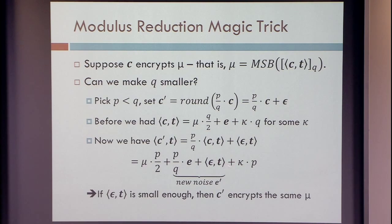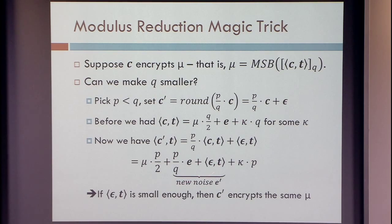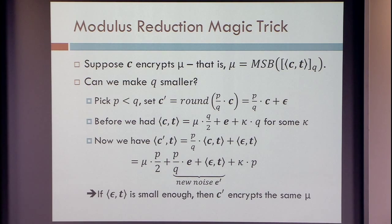In addition, the term k times q became k times p — this is the mod-p reduction. The only added thing we have now is a new error term, which is the inner product between our rounding error and the secret key. The rounding error is a small vector — at most a half or at most one. So what do we do with the secret key? Is the secret key a small vector? So far it's not really — we choose it at random. Let's pull another rabbit.